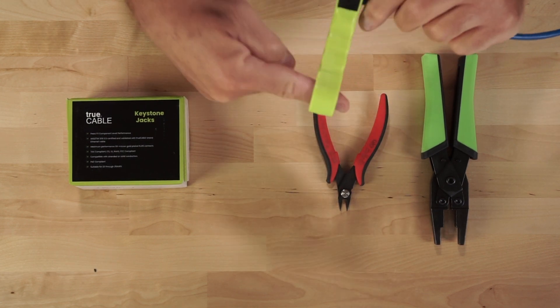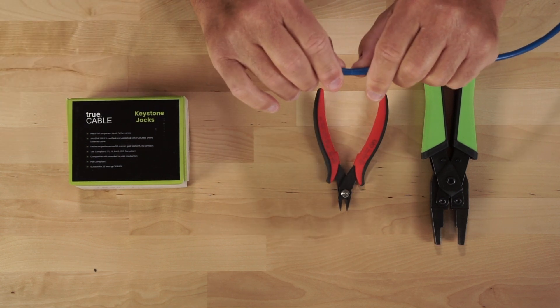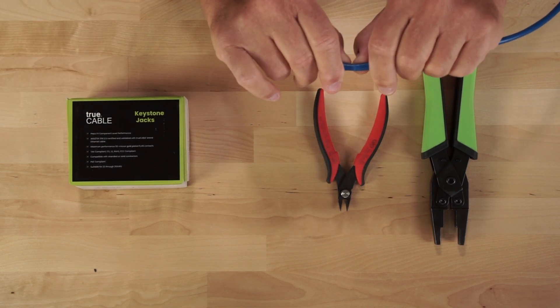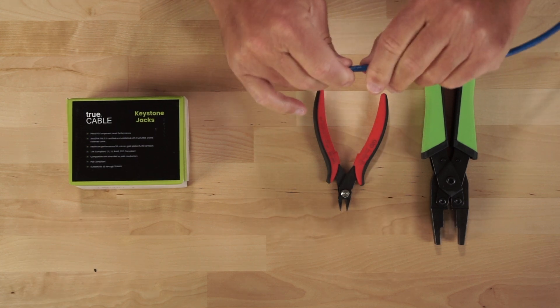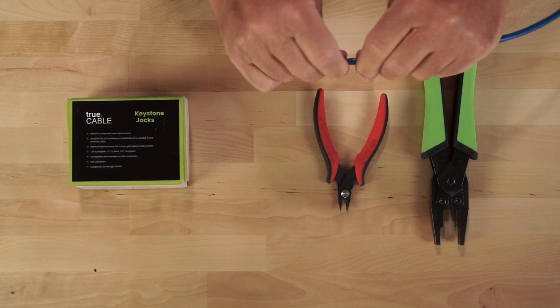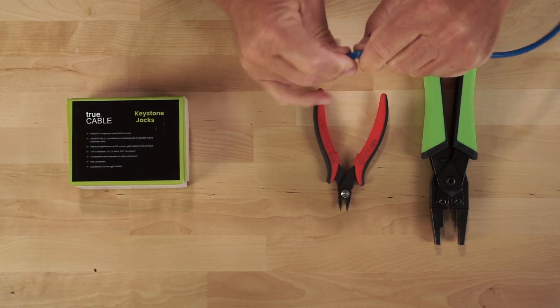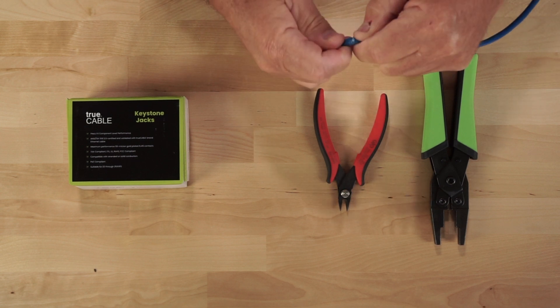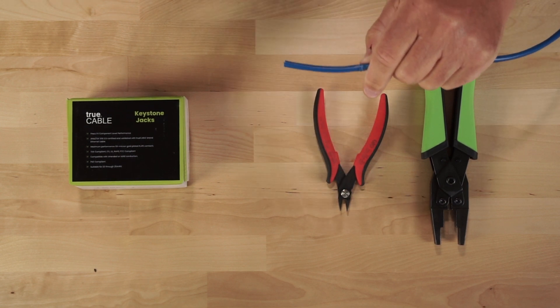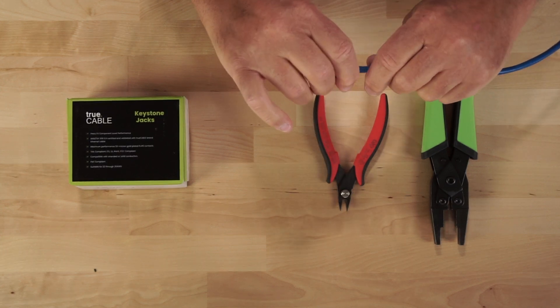However, what I like to do is once I have the blade set, I like to give it like two turns and then if it's a more coarse cable it should pop and split. You might have to work it a little. Now what I find is TruCable makes a nice clean cut on the jacket.